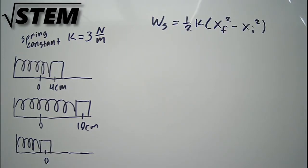In general, the work done by a spring is equal to one half k times the final x position squared minus the initial x position squared.